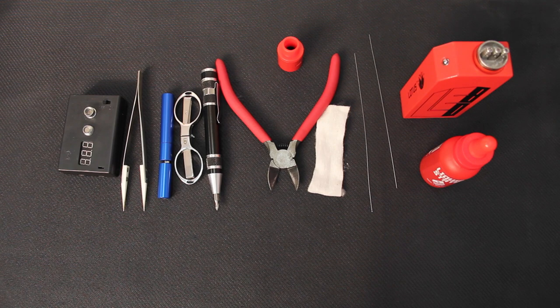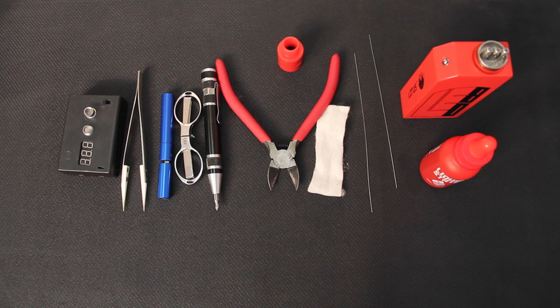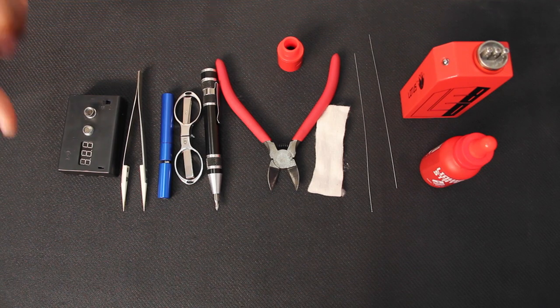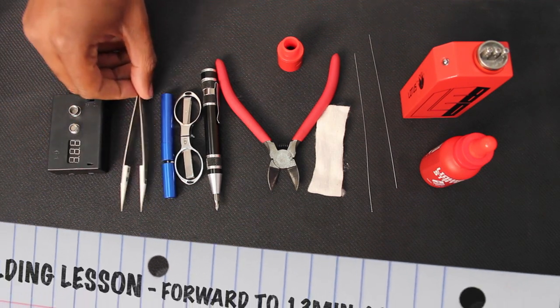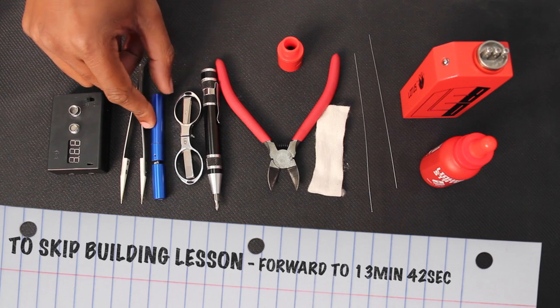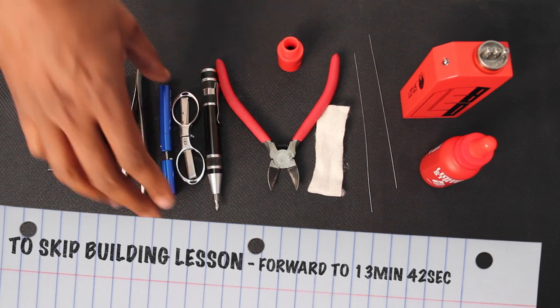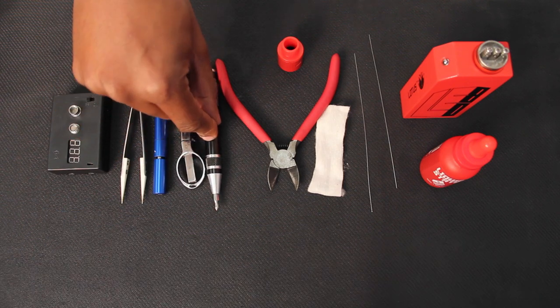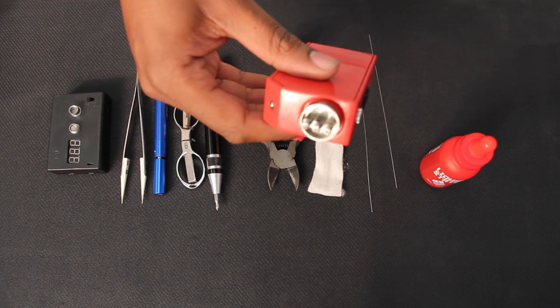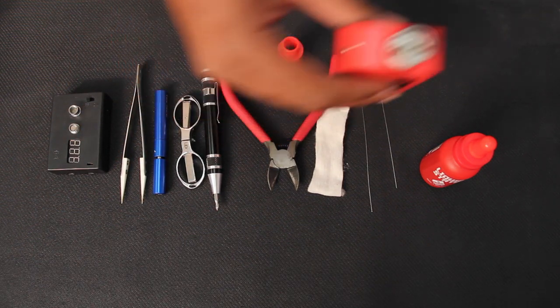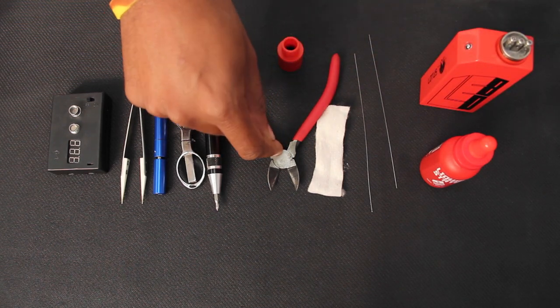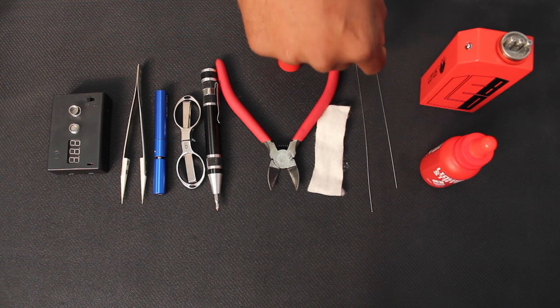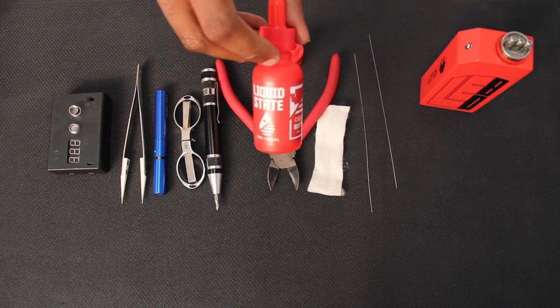Before we get into the build, I want to talk about some of the materials that you're going to need in order to build on this RDA. So what you're going to need is an ohmmeter, some ceramic tweezers, a coil jig. I'm using the Coil Master Coiler that comes with my Coil Master Kit. Some scissors, a Phillips screwdriver because the screws on the posts are Phillips. You're going to want wire cutters to cut your Kanthal. Some cotton, 24-gauge Kanthal. And, of course, some e-liquid.